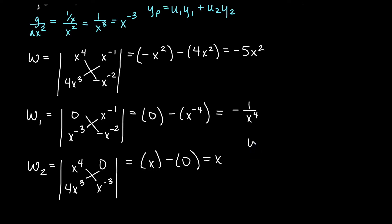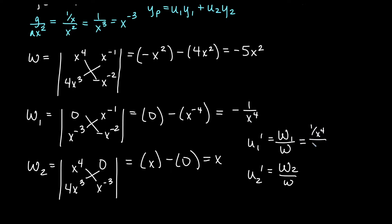Remember that u1 prime equals W1 over W and u2 prime equals W2 over W. For u1 prime, W1 over W: both are negative so we get positive 1 over x to the 4 divided by 5x squared, which gives us 1 over 5x to the 6. For u2 prime, W2 over W: positive x divided by negative 5x squared gives us negative 1 over 5x.